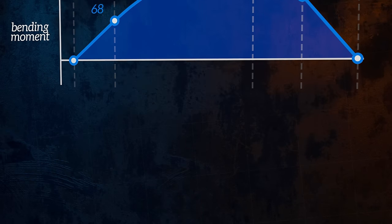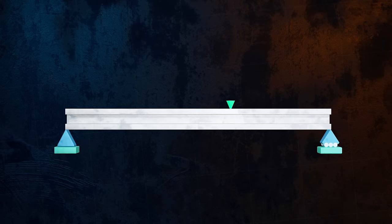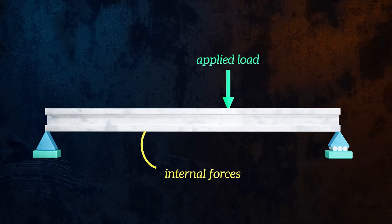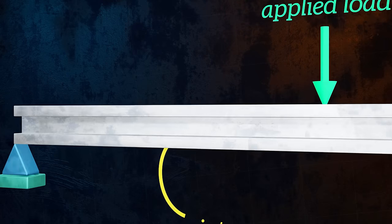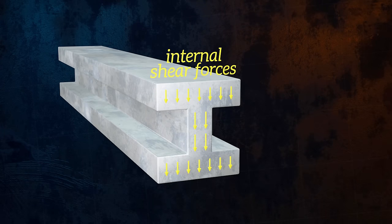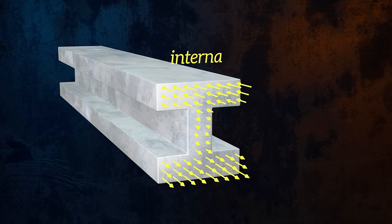I want to start by explaining what shear forces and bending moments actually are. When a beam is loaded, internal forces develop within it to maintain equilibrium. These internal forces have two components: shear forces, oriented in the vertical direction, and normal forces, which are oriented along the axis of the beam.